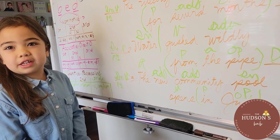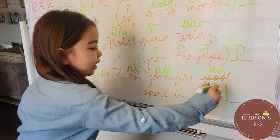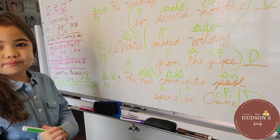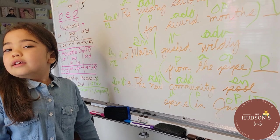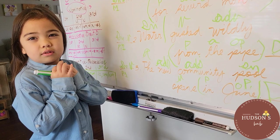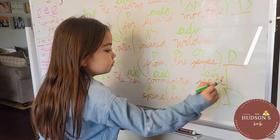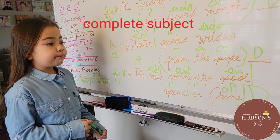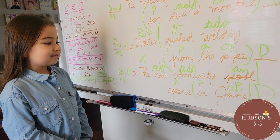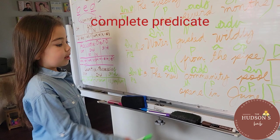Perfect. And what kind of sentence is this? A declarative sentence — it's a statement. What kind of punctuation do we use for a declarative sentence? We use a period. Now you are going to divide the complete subject from the complete predicate by putting a forward slash. What is our complete subject? The new community pool. What is our complete predicate? Opens in June. Good job.